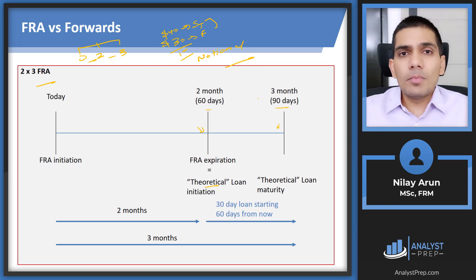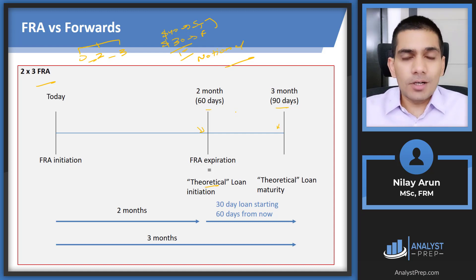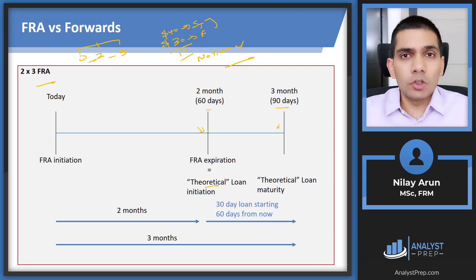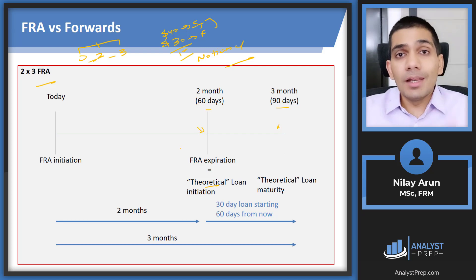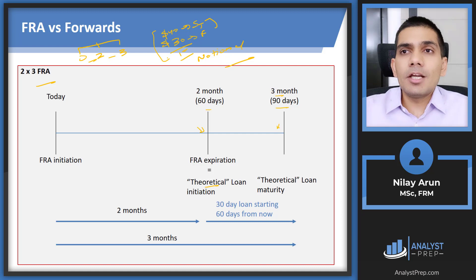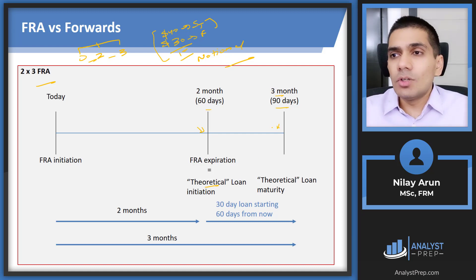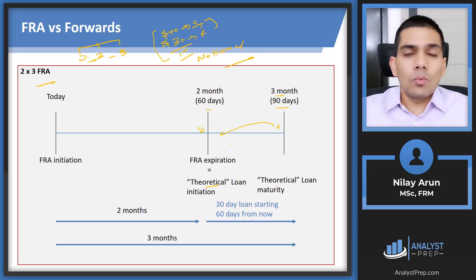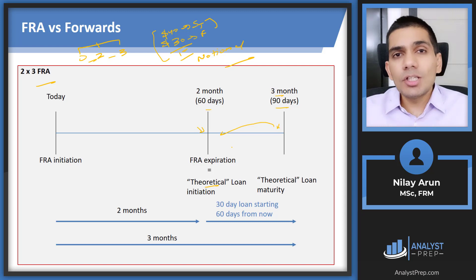The theoretical loan starts at the two-month mark but ends at three months, so the ST minus F occurs at three months — not at two months like a regular forward. If we want to cash-settle at two months, we cannot simply use ST minus F; we must discount that value back to two months. That is the slight complication with FRAs — the additional discounting step.